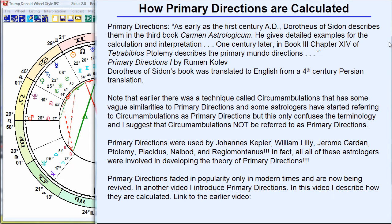I'm going to describe how primary directions are calculated. I've received a lot of requests for me to explain this. The reason I've received these requests is because an increasing number of astrologers are aware of primary directions. They are a very ancient technique, mentioned by Dorotheus of Sidon in the first century AD, and by Ptolemy in the second century AD, so they go all the way back.